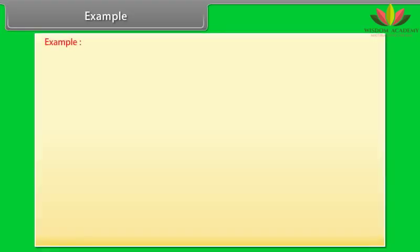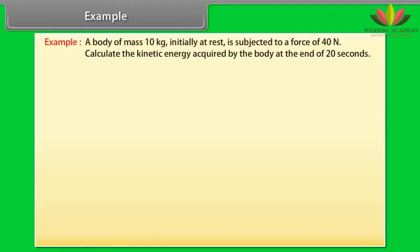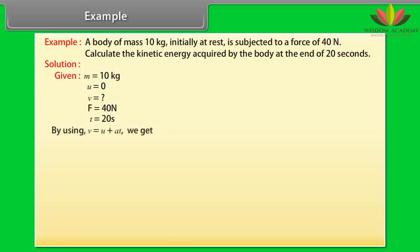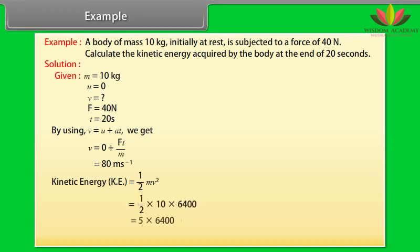Example. Let's take an example of kinetic energy. A body of mass 10 kg initially at rest is subjected to a force of 40 N. Calculate the kinetic energy acquired by the body at the end of 20 seconds. Let's see the solution. Given values are M is equal to 10 kg, U is equal to 0, F is equal to 40 N, T is equal to 20 seconds. By using V is equal to U plus 80, we get V is equal to 80 m per second. Kinetic energy is equal to half mv square. On calculating, we get kinetic energy is equal to 32,000 joules.